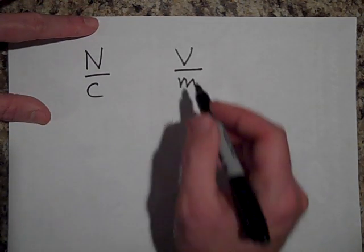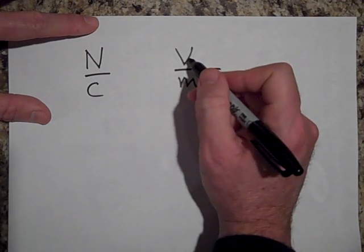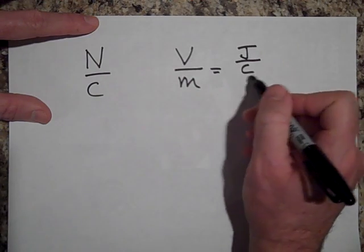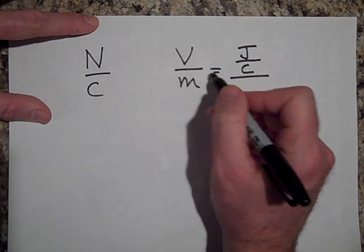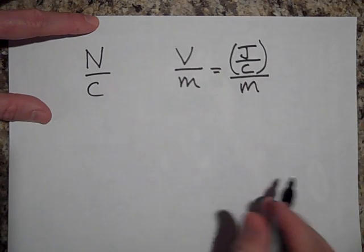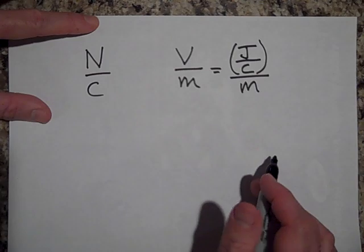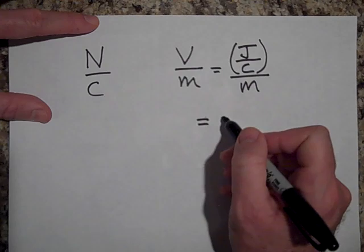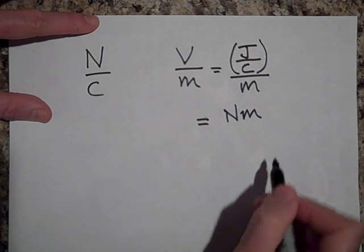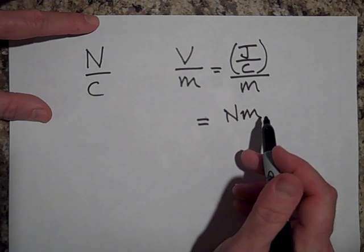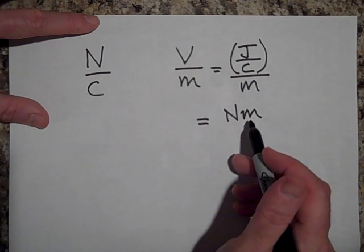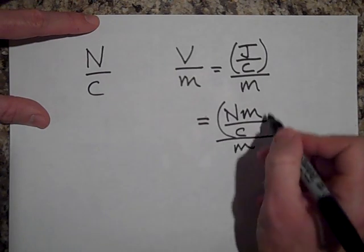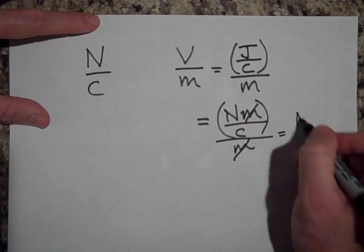Okay, so a volt per meter is the same thing as - a volt is a joule per coulomb. So a joule per coulomb - that's what a volt is - all over a meter. Okay, now a joule is a newton meter. So come down here and a joule is a newton meter because - think of the work equation. Work is measured in joules but it's also newton meters. And so we got newton meters over coulombs divided by meters. So that's newtons per coulomb.